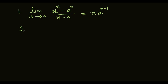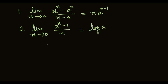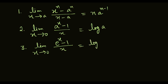Second formula is: limit x tends to 0, a raised to power x minus 1, upon x, equal to log a. Third formula is: in place of a we put e, so limit x approaches to 0, e raised to power x minus 1, upon x, equal to log e.